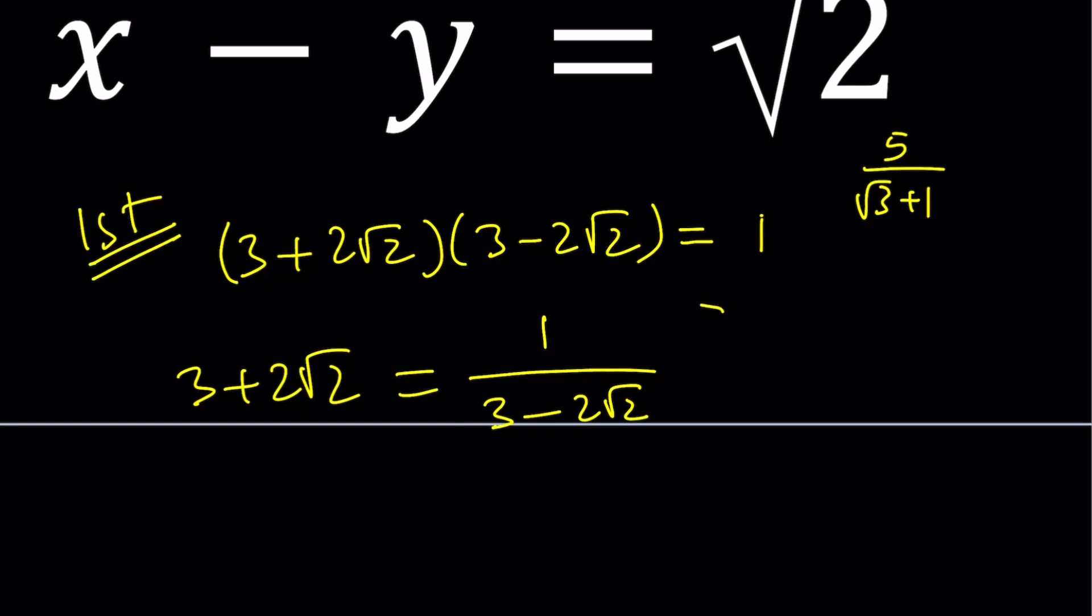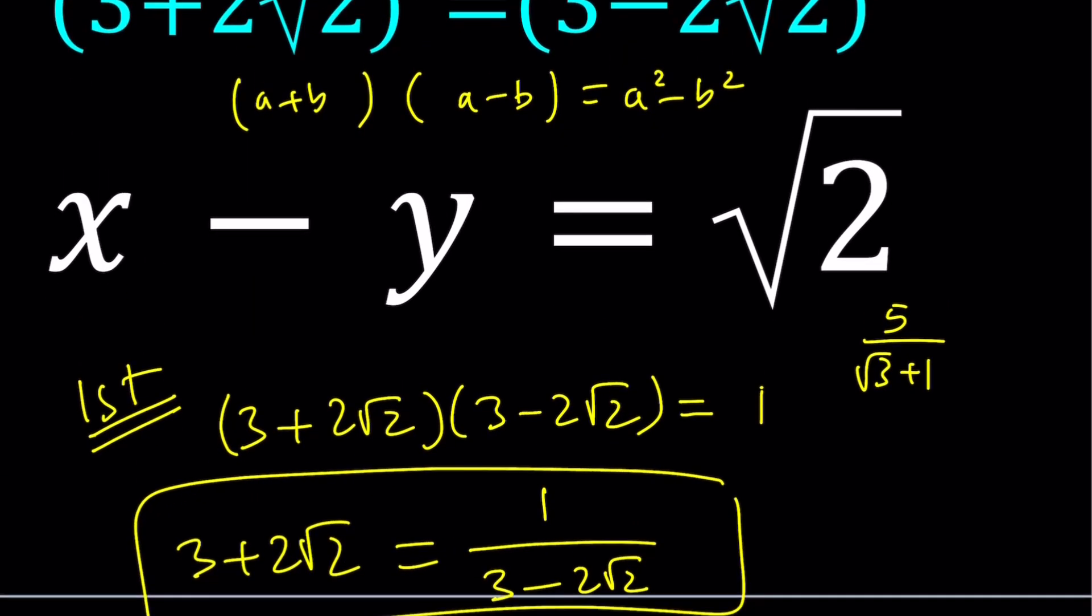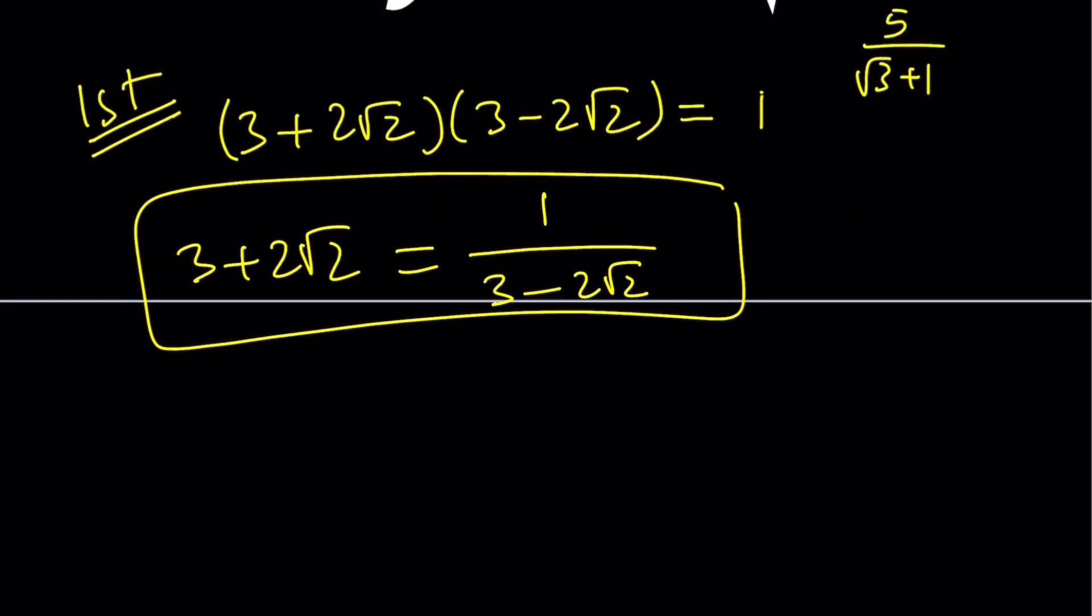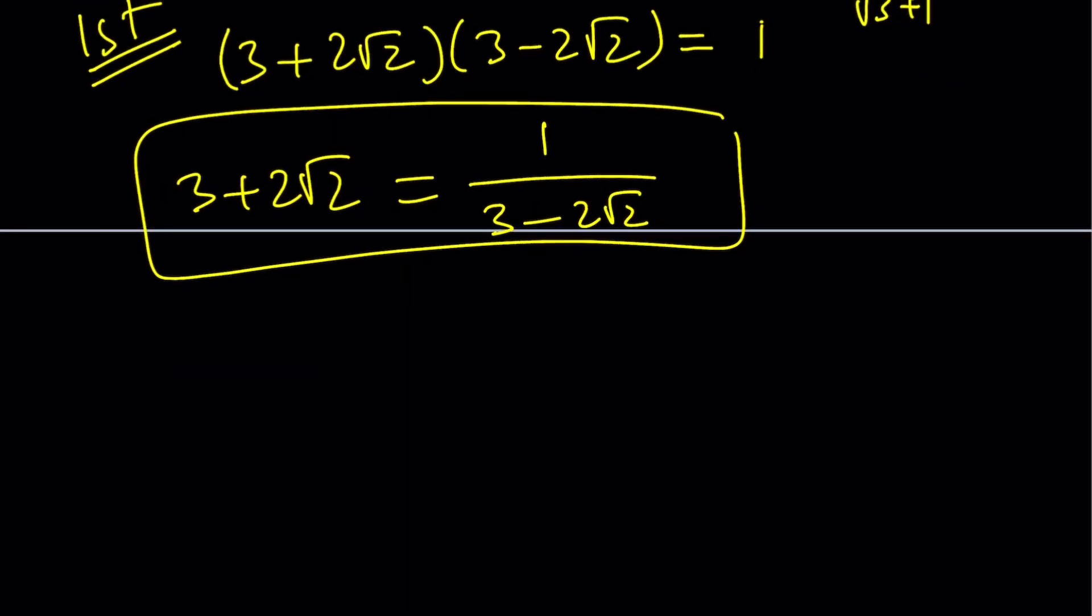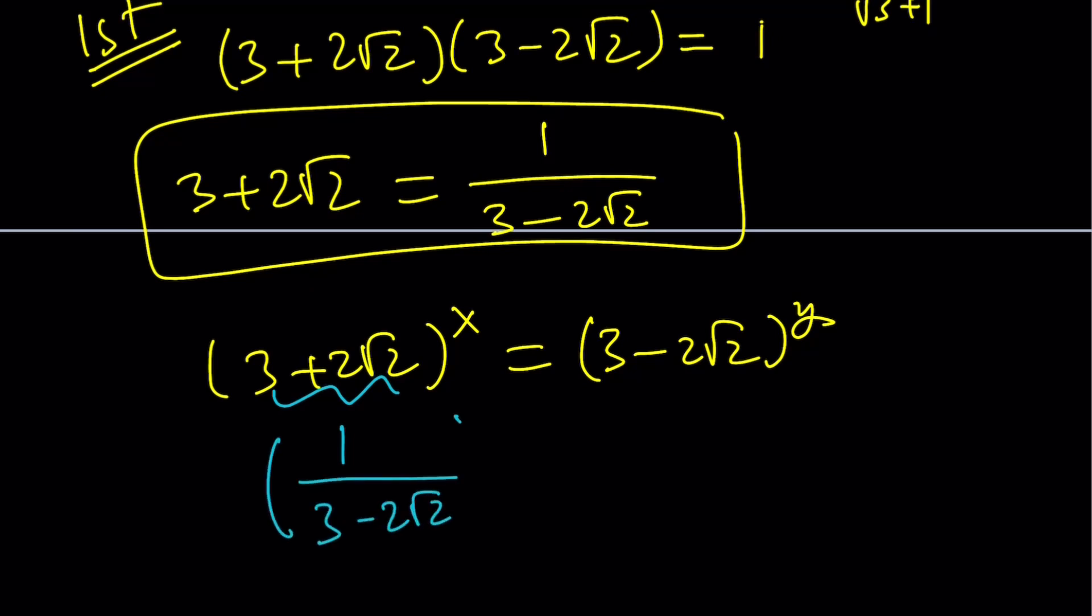Now what I can do with that is, in my first equation, I can replace 3+2√2 with that. Remember our first equation was (3+2√2)^x = (3-2√2)^y. I'm going to replace this guy with 1/(3-2√2) and then raise it to the power x. That equals (3-2√2)^y.